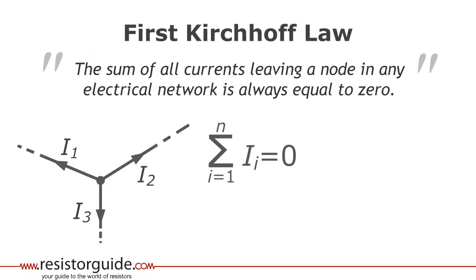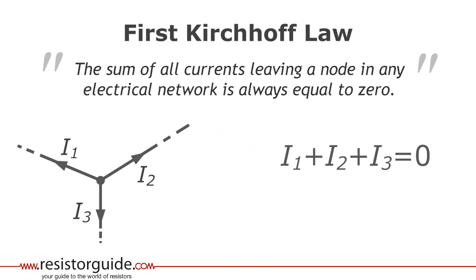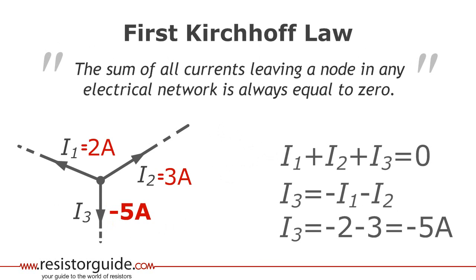To explain the law we take a look at a node with three branches. It means that I1 plus I2 plus I3 in this node is equal to zero. In this example I1 is 2 amps and I2 is 3 amps. Using the first law we can easily calculate that I3 is minus 5 amps.